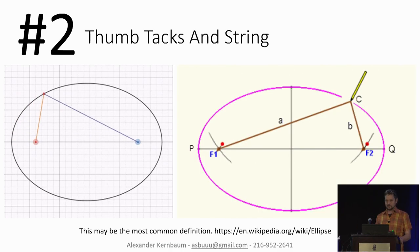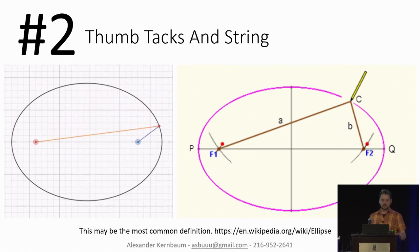But this is when I really fell in love with ellipses when I was about 10 or 12 years old. Someone gave me two thumbtacks and a string and a pencil, and you can draw an ellipse. Why does this work? Well, it really comes from one of the definitions of an ellipse, which is that the lengths A and B, the sum of the lengths A and B is constant.